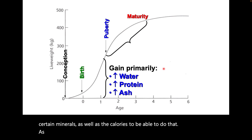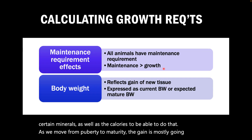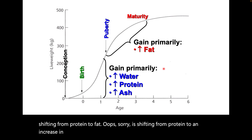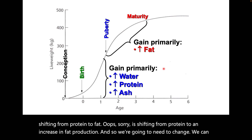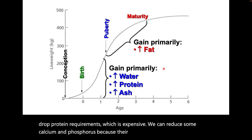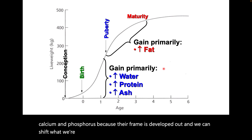As we move from puberty to maturity, the gain is shifting from protein to an increase in fat production. So we're going to need to change our feeding approach — we can drop protein requirements, which are expensive, and reduce some calcium and phosphorus because their frame is developed. We can shift what we're feeding during that time to better support the actual phase that the animal is in.